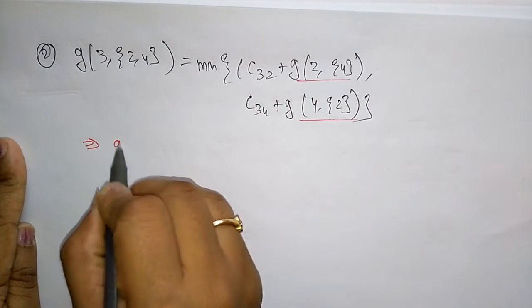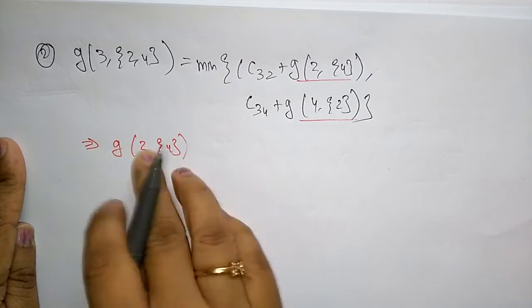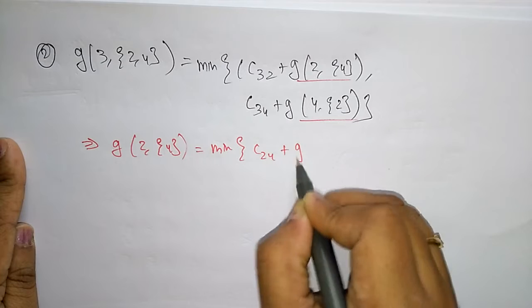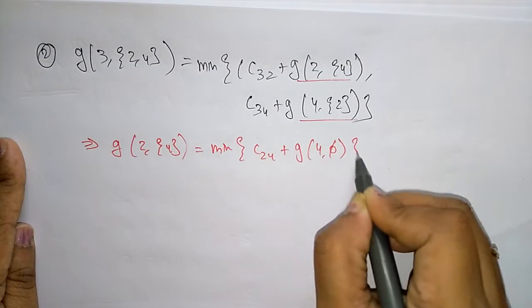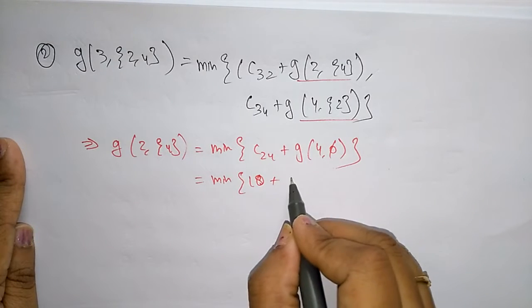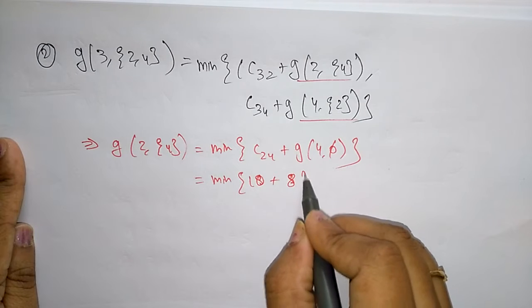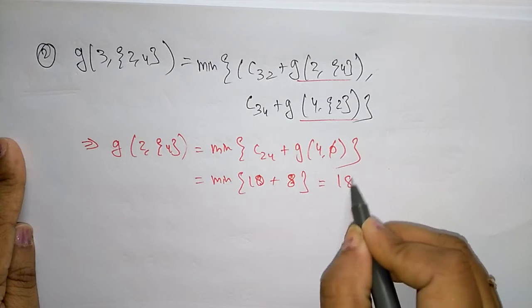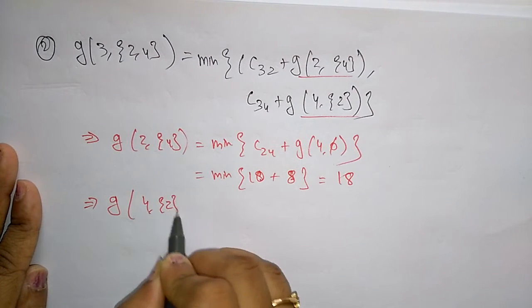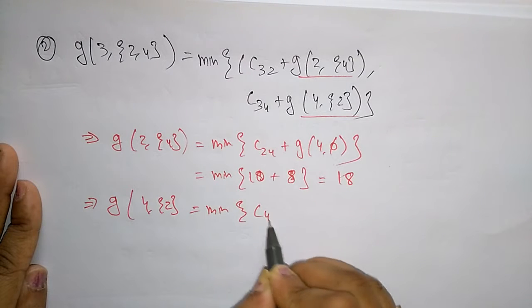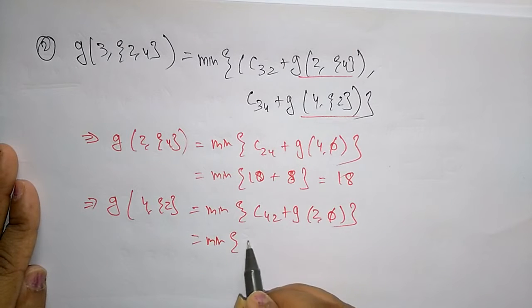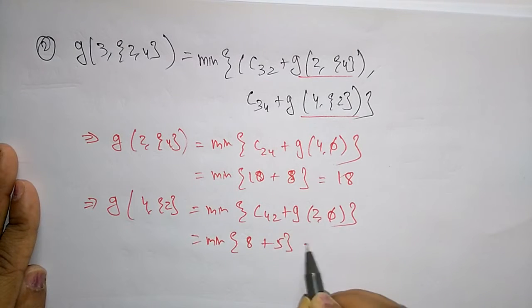First let us calculate g(2, {4}) and substitute those values. Applying the formula: minimum of c24 plus g(4, {}). c24 is 10 and g(4, {}) already calculated is 8, giving 10 plus 8 equals 18. Next, g(4, {2}): minimum of c42 plus g(2, {}) = 8 plus 5 = 13.